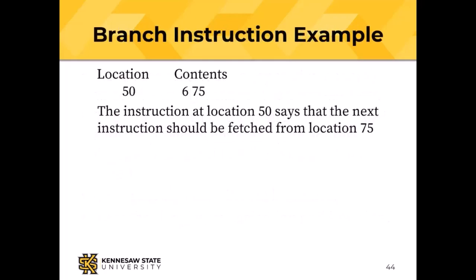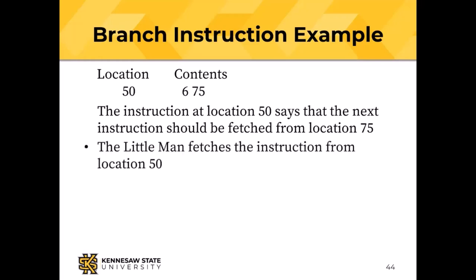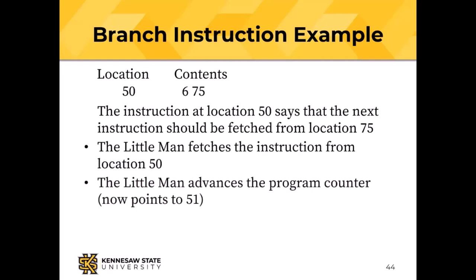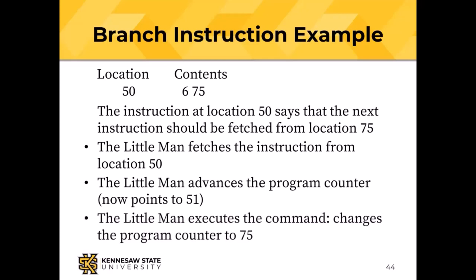Here's an example: location 50 contains a 675. 6 is the unconditional branch and the operand field is 75. So that says the next instruction should be fetched from location 75 — maybe we have a method or procedure there. The little man fetches the instruction from location 50, advances the program counter to 51, and then during the execute phase changes the program counter to 75. When the next fetch takes place, the instruction will be fetched from location 75.